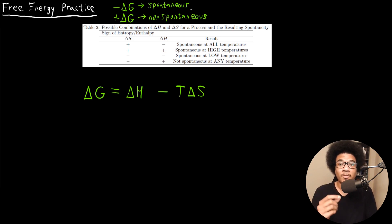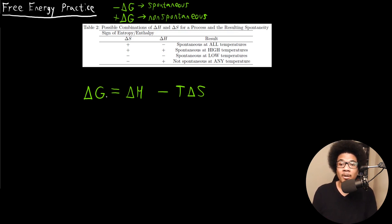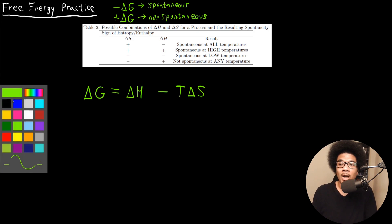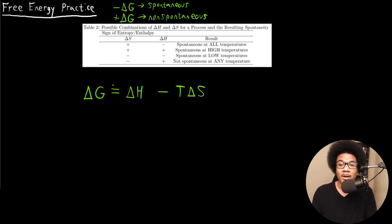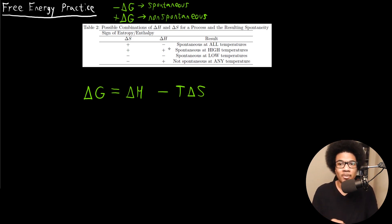Before we dig into some specific examples, I put together this chart to kind of guide you as far as the signs of ΔS and ΔH and how that's going to affect spontaneity. All of this is related to our ΔG equation. Based on the signs and the magnitude of the temperature, it's going to determine whether something is spontaneous at all temperatures, non-spontaneous at all temperatures, or depending on the temperature.